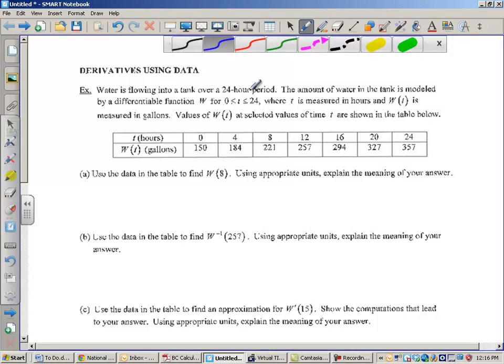I've got water that's flowing into a tank over a 24-hour period. The amount of water in the tank is modeled by a differentiable function W, for 0 to 24. T is measured in hours, that's in the table here, and W of T, that's like the Y value for T, is measured in gallons. Values of W(t) at selected values of time t are shown in the table below.